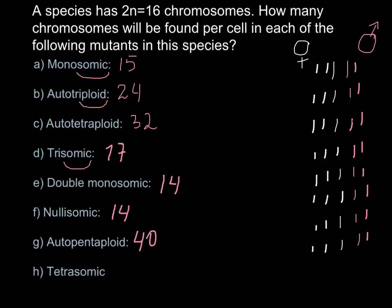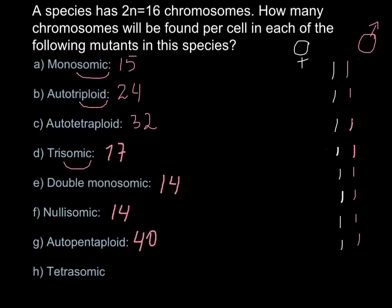The last question: tetrasomic. Let me restore our chromosome number that we started with. 'Somic' gives us the hint that this is a question about number of chromosomes, and 'tetra' means four. So here we might have four copies of chromosome number two — meaning 16 plus two extra chromosomes gives us the correct answer: 18.